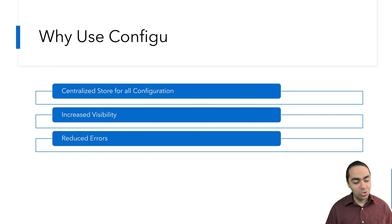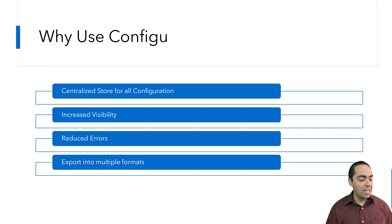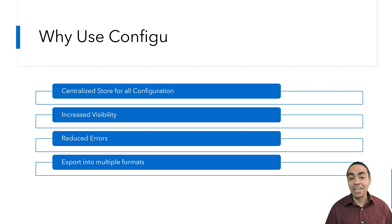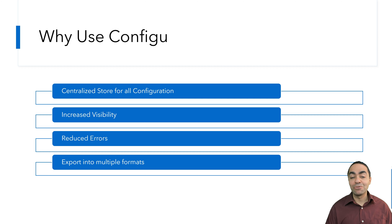This also reduces human error. And exporting is a really neat feature because you can export config in multiple formats. You'll see in just a little bit how we can export things like a kubeconfig file, a Terraform .tfvars file, and more.